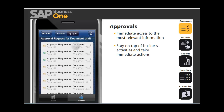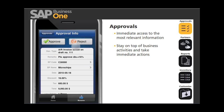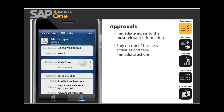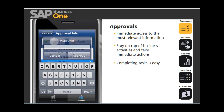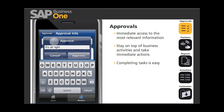With just a few taps, you're able to view all the details of an approval request, complete with remarks from the requester, discounts applied, order amount, and more. You also have the ability to drill into the key customer data to review relevant information before making a decision. Completing approval tasks is just as easy — simply approve or reject the request and provide comments to the requester if needed.